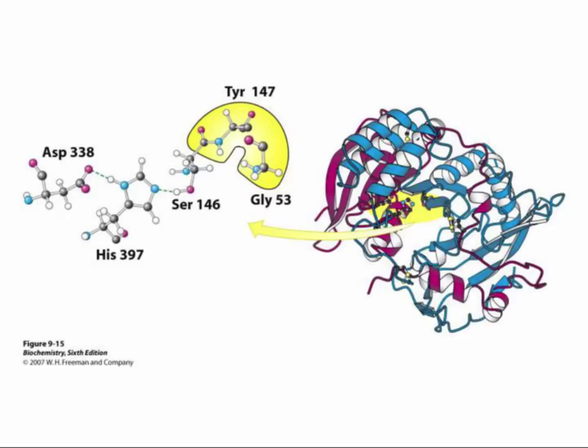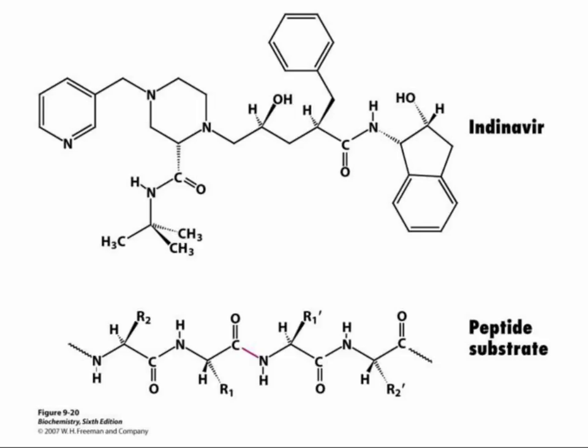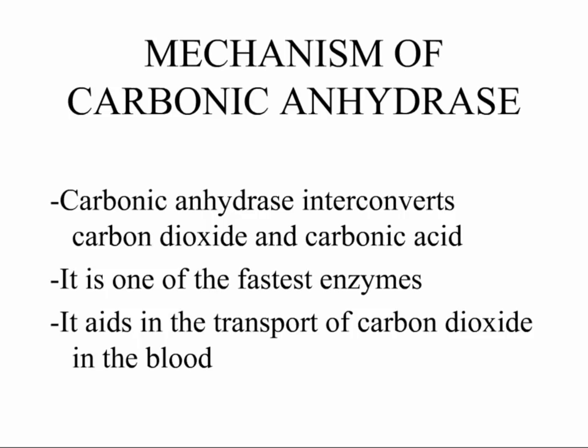Carboxypeptidase II is not significantly similar to either chymotrypsin or subtilisin. This figure shows the structure of an important protease inhibitor, indinavir, which is used in the treatment of AIDS. Indinavir inhibits the HIV protease produced by the AIDS virus, and indinavir resembles the peptide substrate for the HIV protease. We'll now turn our attention to a different enzyme, carbonic anhydrase.